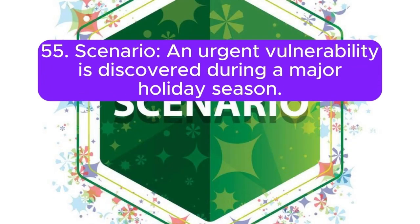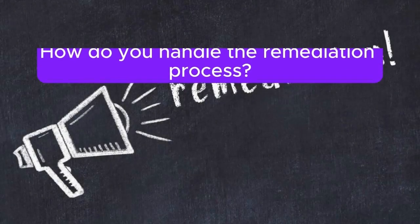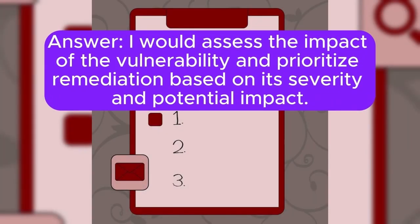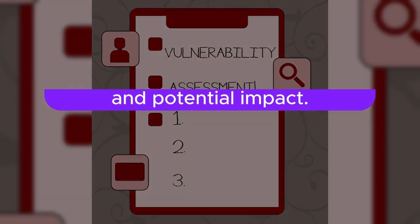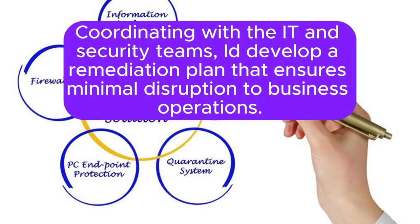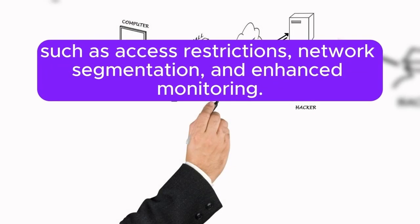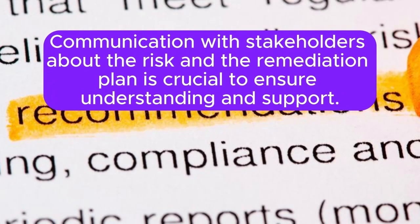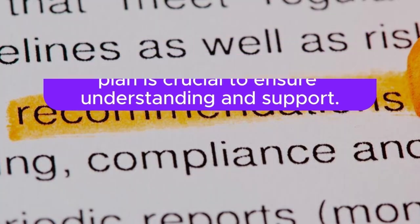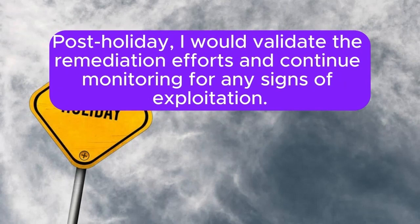Scenario 55: An urgent vulnerability is discovered during a major holiday season. How do you handle the remediation process? I would assess the impact of the vulnerability and prioritize remediation based on its severity and potential impact. Coordinating with the IT and security teams, I would develop a remediation plan that ensures minimal disruption to business operations. If immediate patching isn't feasible, I would implement temporary mitigations such as access restrictions, network segmentation, and enhanced monitoring. Communication with stakeholders about the risk and the remediation plan is crucial. Post-holiday, I would validate the remediation efforts and continue monitoring for any signs of exploitation.